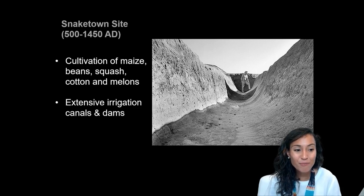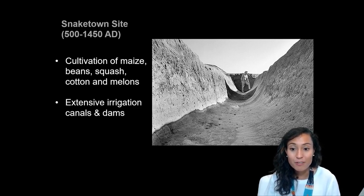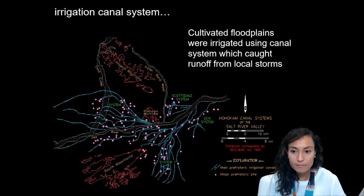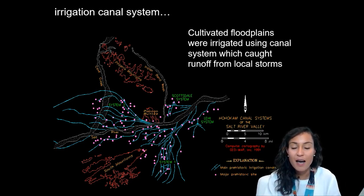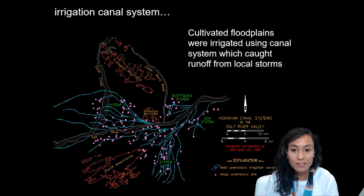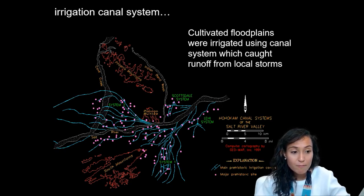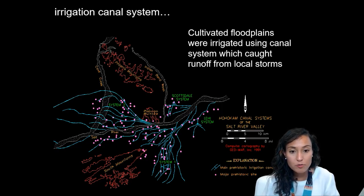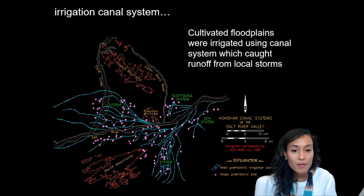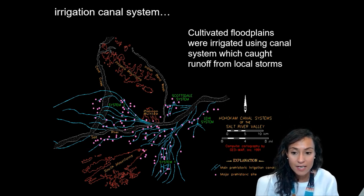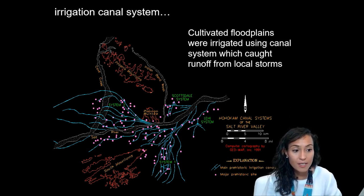Cultivated floodplains caught runoff from local storms using a canal system which fed water to the nearby fields. Looking at the extensive network of canal systems associated with the Hohokam occupations of southern Arizona, these irrigation canals were shallow and wide — on average about 10 feet deep and 30 feet wide, and some of them reached 10 miles in length. People would have used woven mats as dams to help channel and control the flow of water within these canals. The extensive irrigation system developed by the Hohokam allowed them to have a more sedentary lifestyle and to aggregate in large population centers like Snaketown.